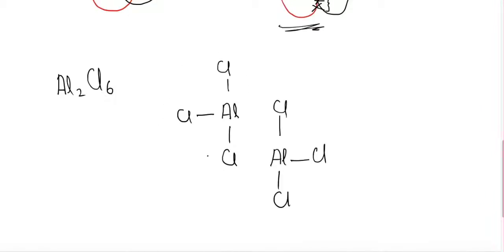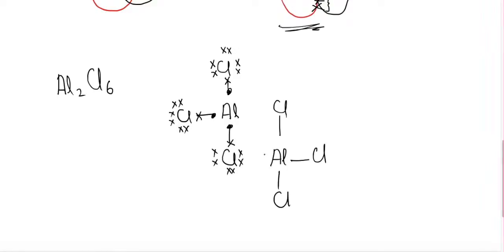AlCl3 is unstable because aluminum has an incomplete octet — only six electrons are present in the outermost shell of aluminum. So the octet is not complete and the compound is unstable. Similarly, the second molecule of AlCl3 is also unstable for the same reason. Therefore, these two molecules will make coordinate covalent bonds with each other.